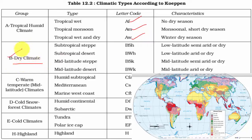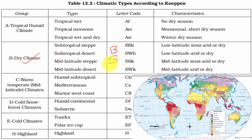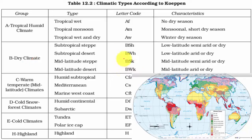The other group, called dry climatic conditions, is represented by the capital letter B under Köppen's scheme of classification. Here again we have subtypes, each represented by a combination of alphabets. B means dry type of climate. S means steppe, which is essentially grasslands — so BS means dry grassland regions. BW also appears — W stands for desert — so BW means dry desert type of climate.